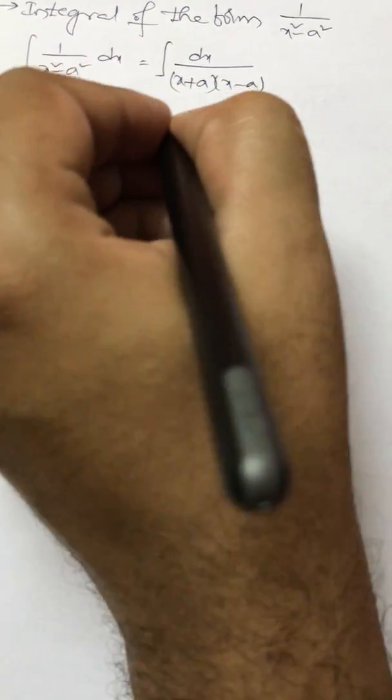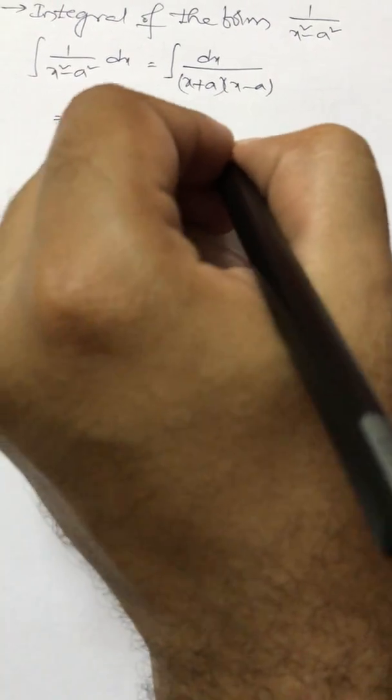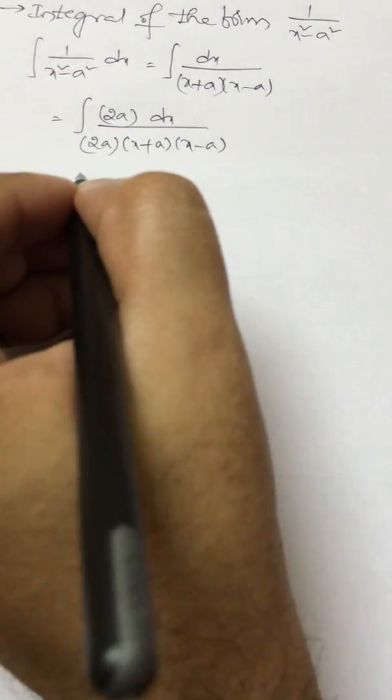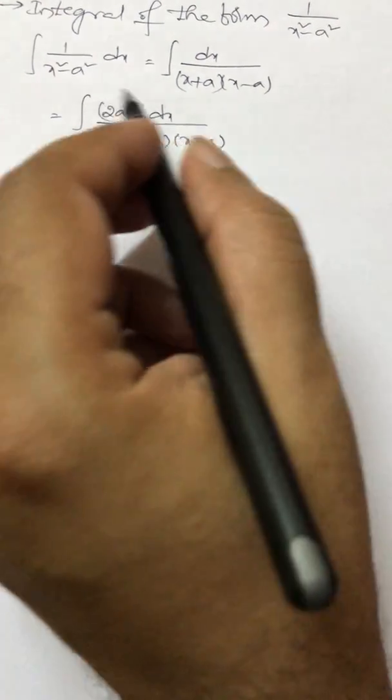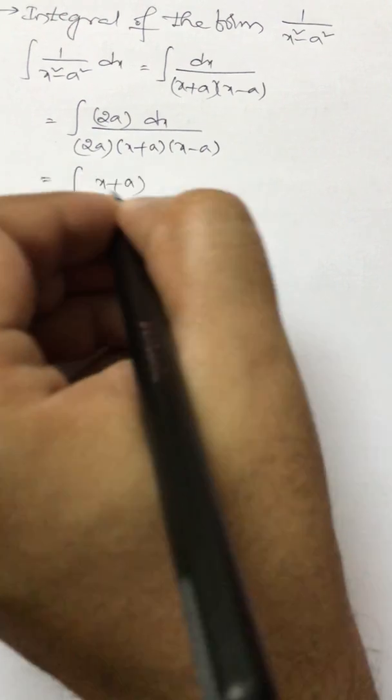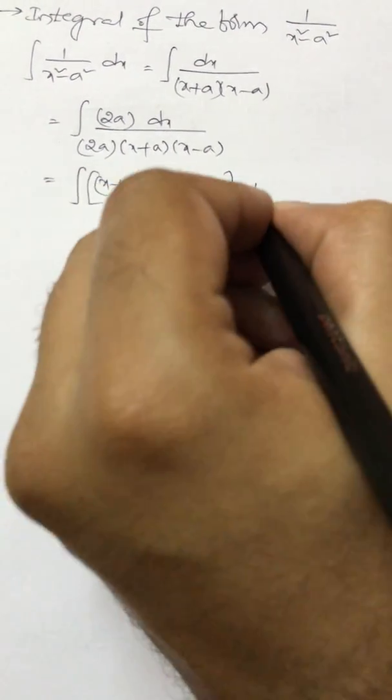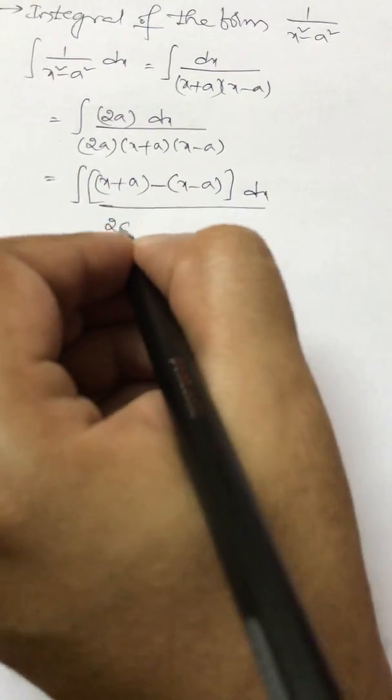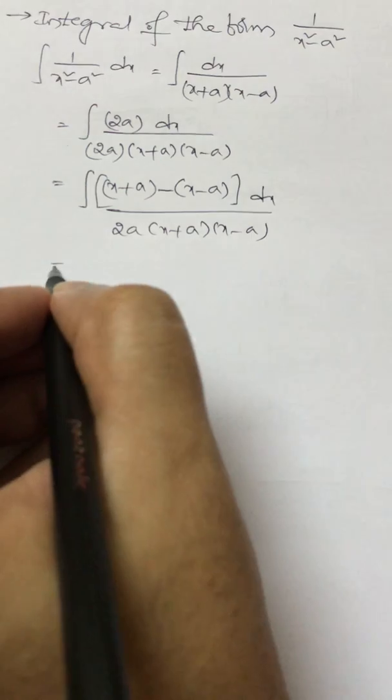So 2a into dx by 2a into x plus a into x minus a. So keep the denominator as is and then write the numerator as difference of those two. x plus a minus x minus a dx by 2a into x plus a into x minus a.